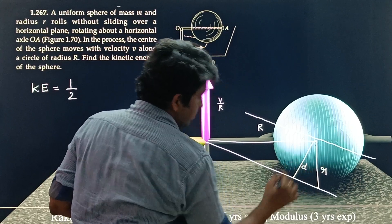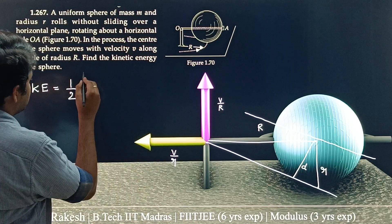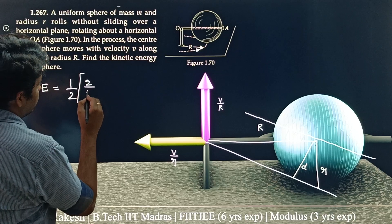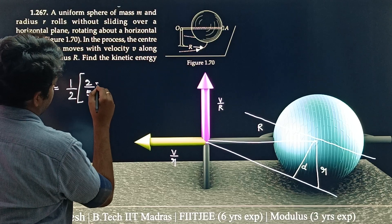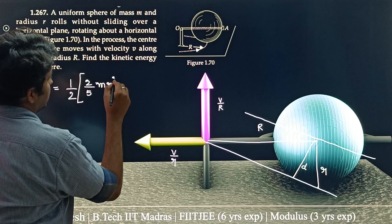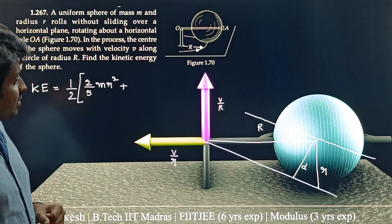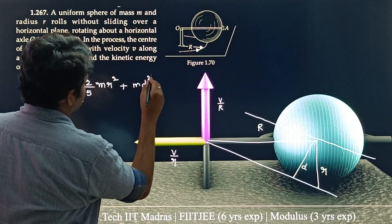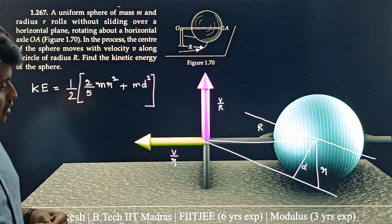Moment of inertia about this axis is, from parallel axis theorem, about this axis. So moment of inertia about that axis is 2 by 5 mr square, 2 by 5 mr square plus m into d square.